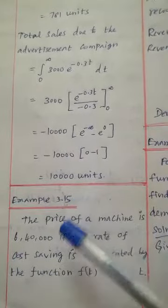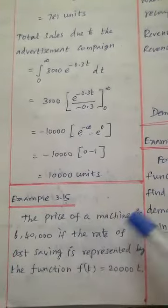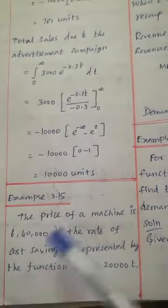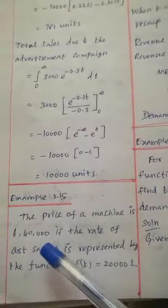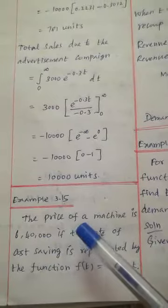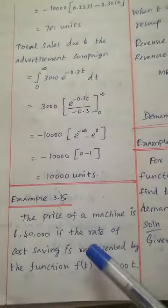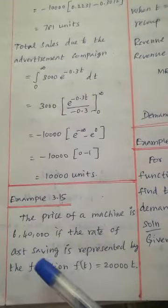Example 3.15: The price of a machine is 640,000. If the rate of cost saving is represented by the function f(t) = 20,000t, find out the number of years required to recoup the cost of the machine.